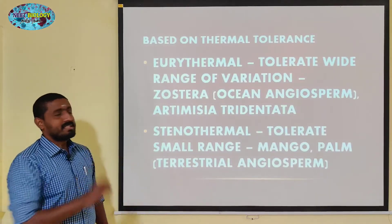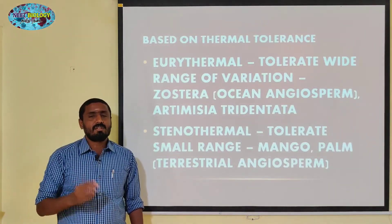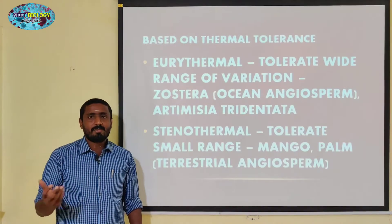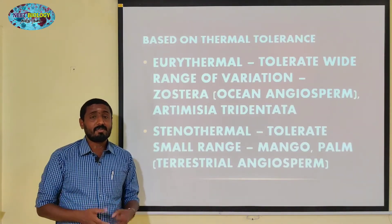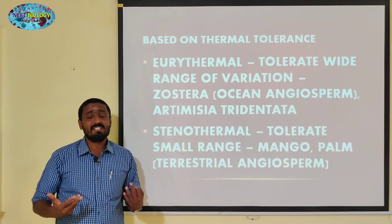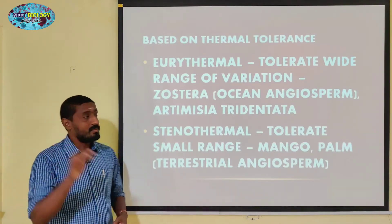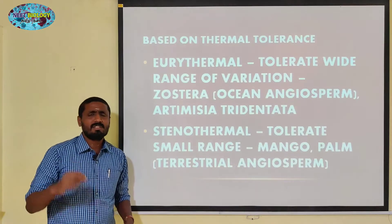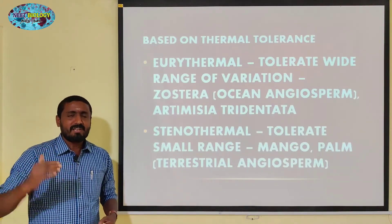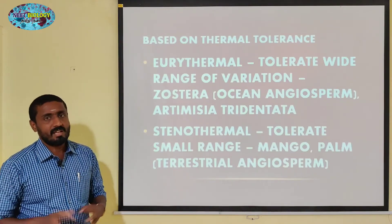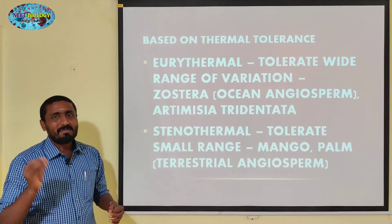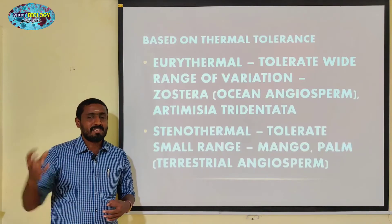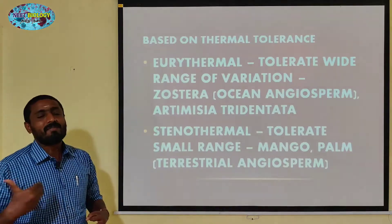This is Eurythermal. Next is Stenothermal — this is an important part; only a small variety of plants can tolerate this. How can they tolerate this type of temperature? This is Stenothermal. Mango and palm are angiosperms; under extreme conditions they need adaptation. The mango tree and palm plant have adaptation capability and survival ability across high temperature variation.